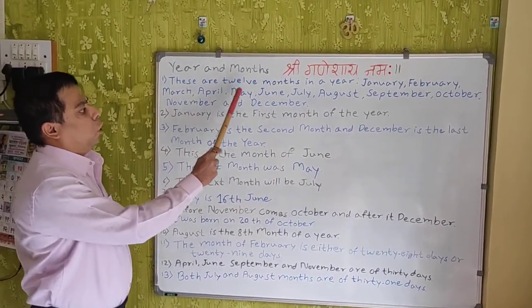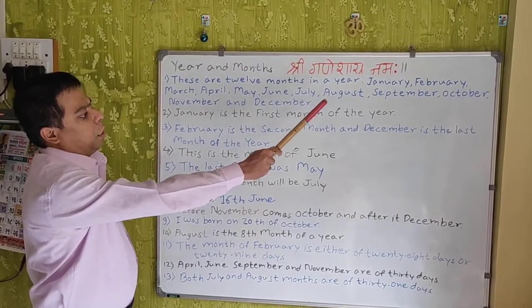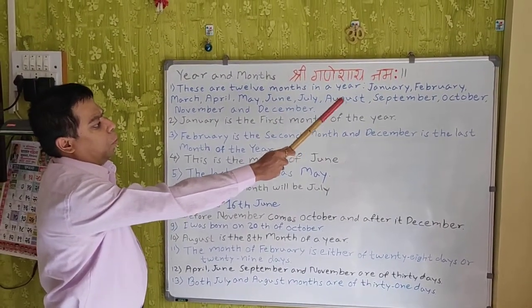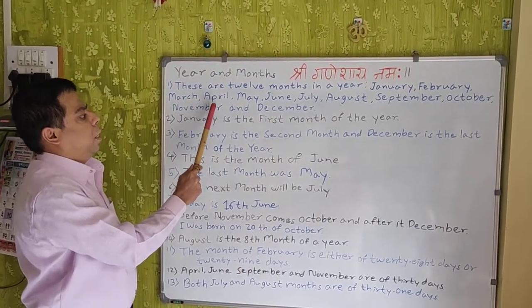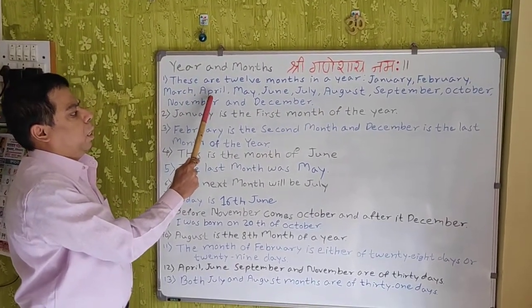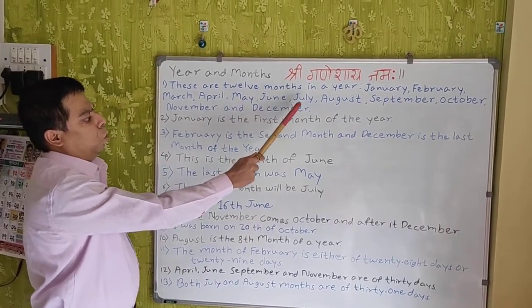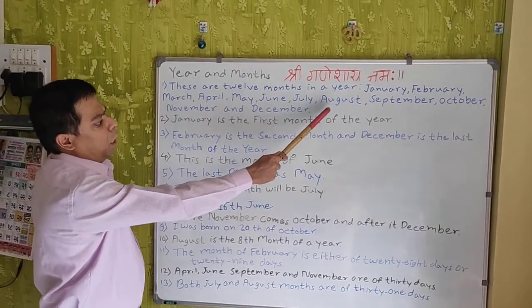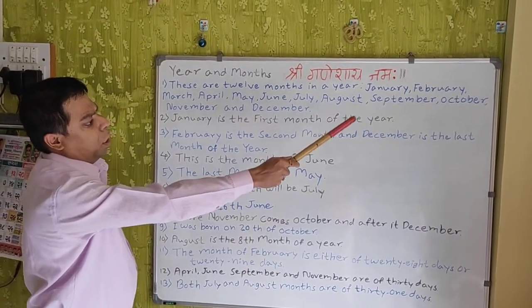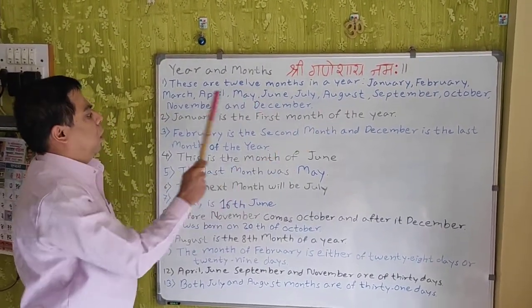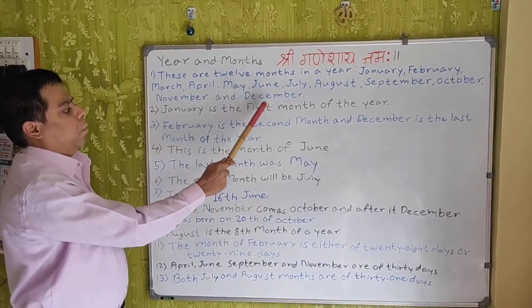These are 12 months in a year. January, February, March, April, May, June, July, August, September, October, November and December.